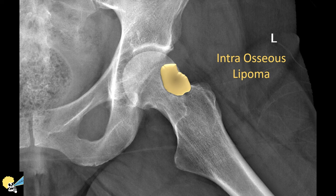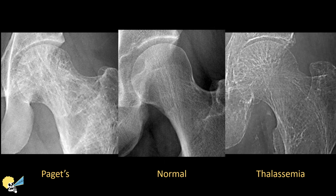Finally, we have side-to-side comparisons of patients with true thickened trabeculae as in Paget's disease, a normal patient with normal trabeculae, and a patient with thin trabeculae in the background of poor bone mineralization. Obviously, when you look them side by side, it's quite simple to spot the differences. So, trabecular patterns — now you know!